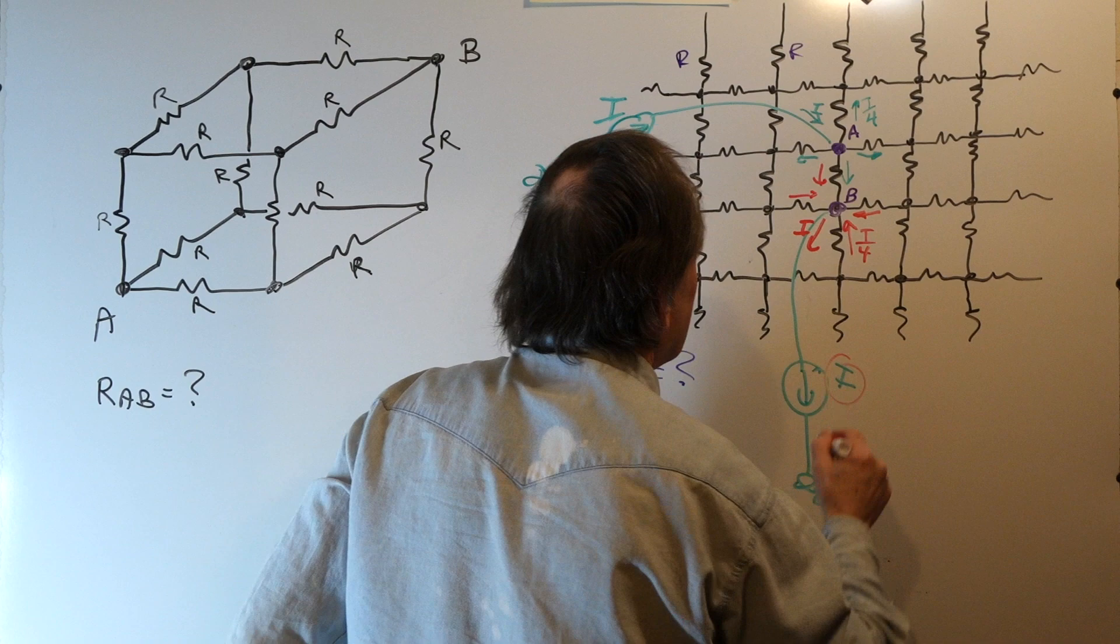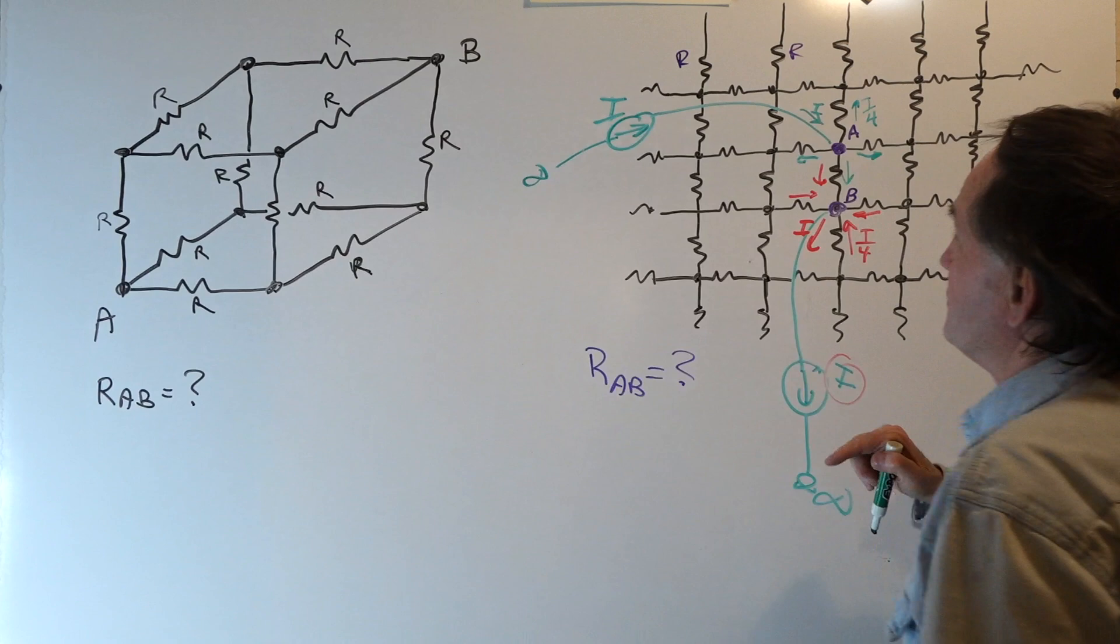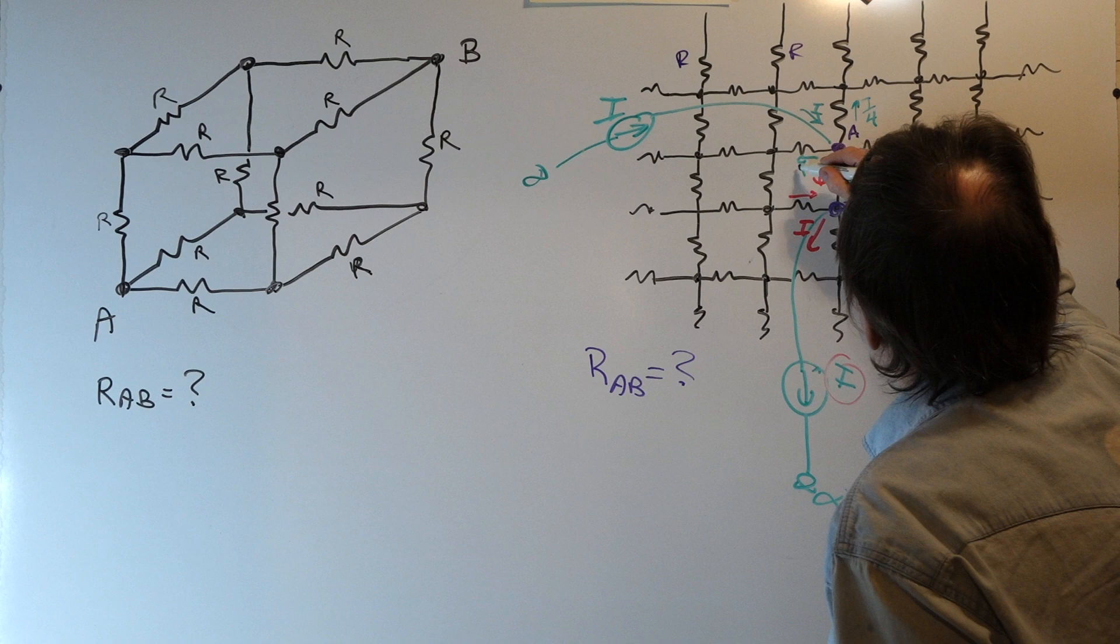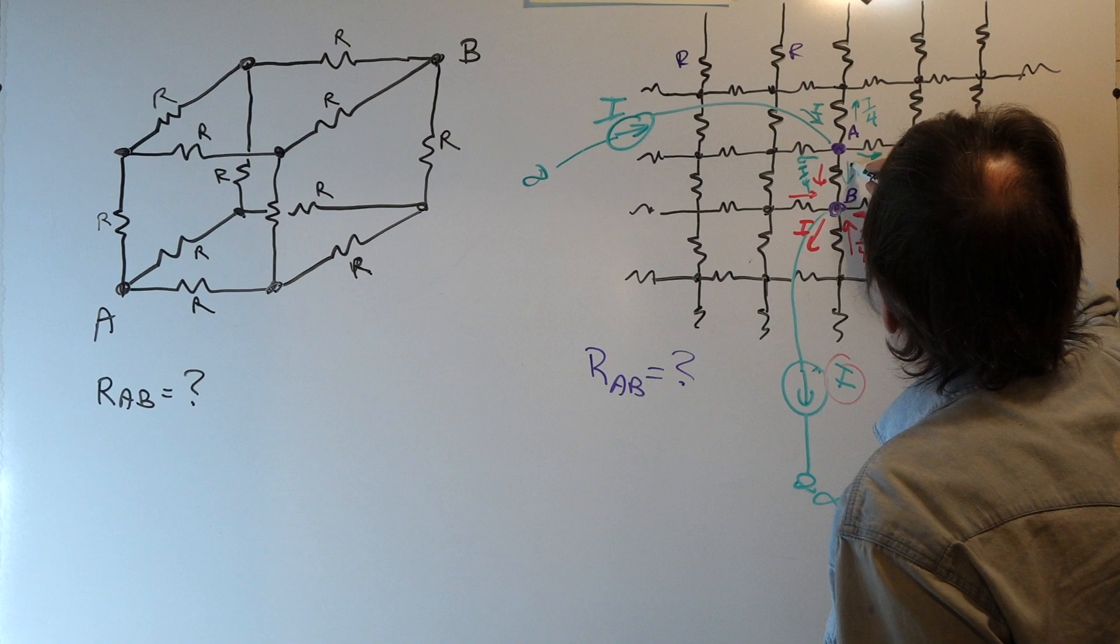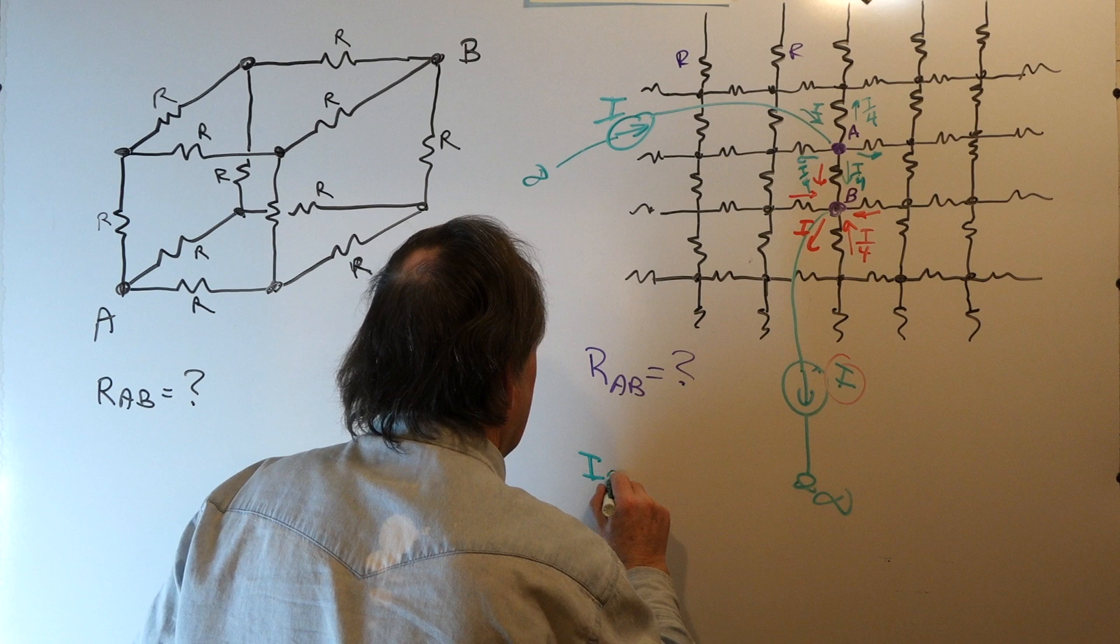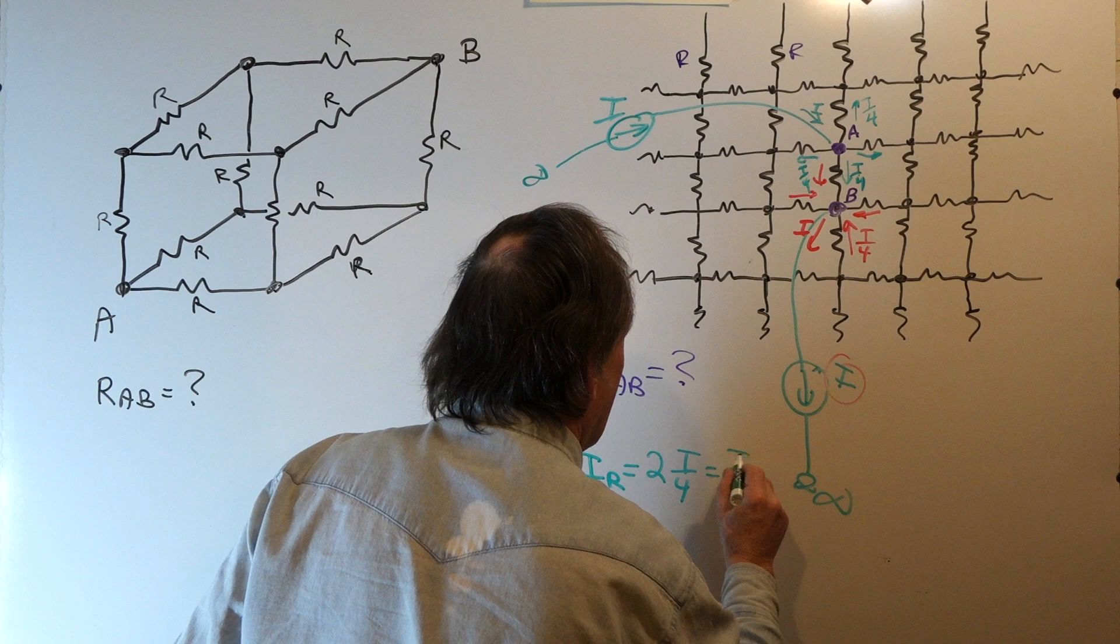So we have superposition here. We have both current sources turned on now. We know that the current due to this current source is I over four, and the current due to this current source is I over four. So by superposition, the current flowing in this resistor is just the sum of those two, or I of the resistor is twice I over four, or I over two.